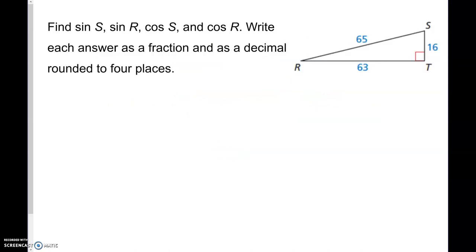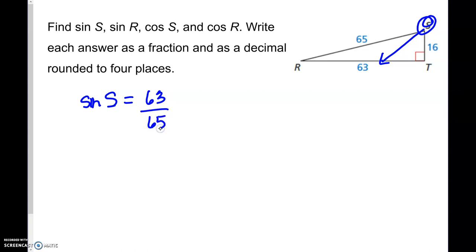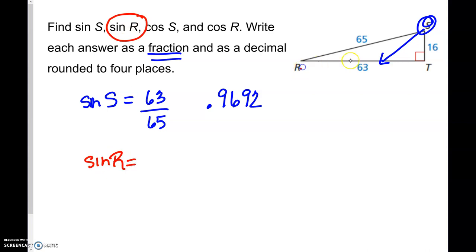In this problem, when doing sine, cosine, and tangent with a triangle, they want us to find the sine of S. Starting at S, the opposite side gives the ratio 63 over the hypotenuse 65. As a decimal, 63 divided by 65 gives 0.9692. Then the sine of R: the opposite side is 16 over the hypotenuse 65. So 16 divided by 65 is 0.2462.